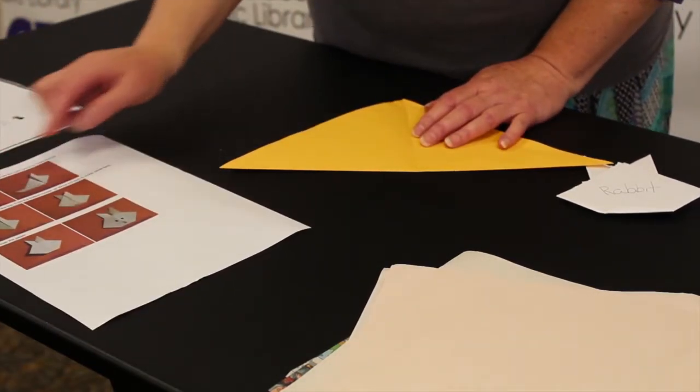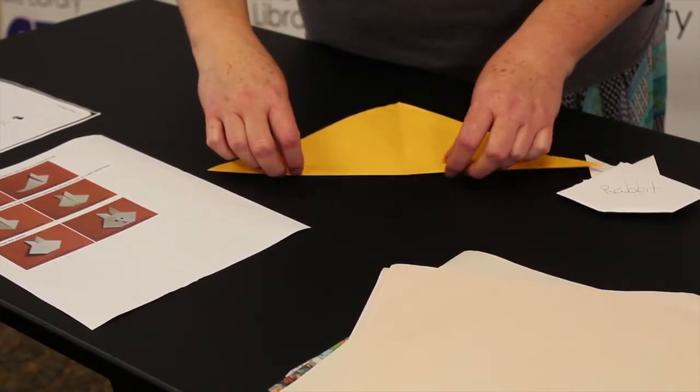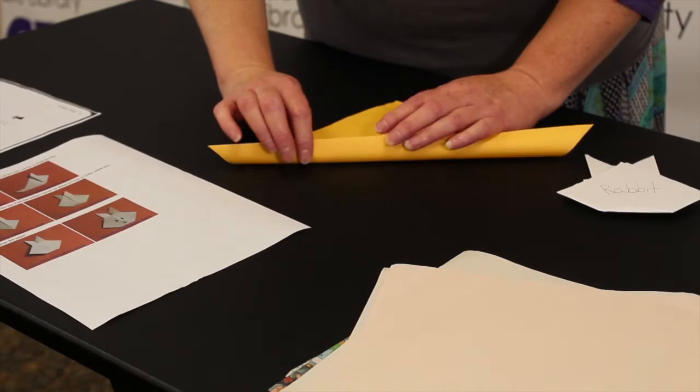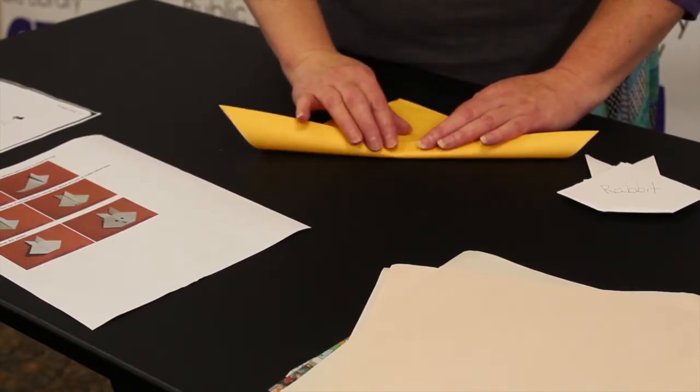Turn the paper over. Now, it says to fold the bottom edge, there's our bottom edge, about two-thirds of an inch, and then press it and fold it. Okay, so this is important. We've got to kind of have this up a little bit.